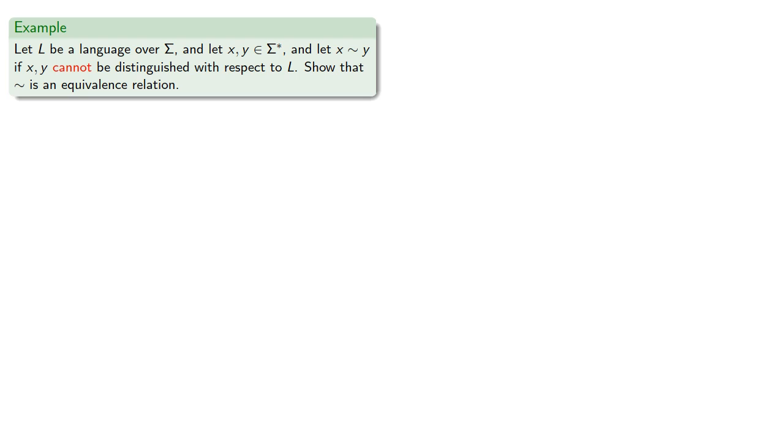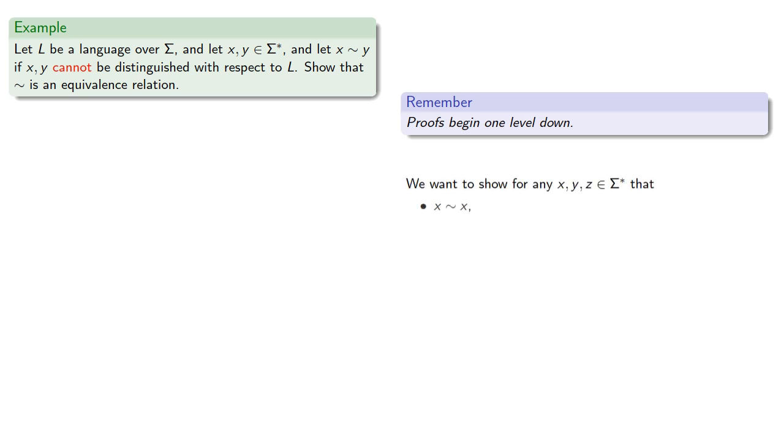So let L be a language over sigma, and let X, Y be strings, and let X squiggle Y if X cannot be distinguished with respect to L. Show that squiggle is an equivalence relationship. Remember, proofs begin one level down. We want to show for any X, Y, Z in squiggle that X squiggle X, if X squiggle Y then Y squiggle X, and if X squiggle Y and Y squiggle Z, then X squiggle Z.